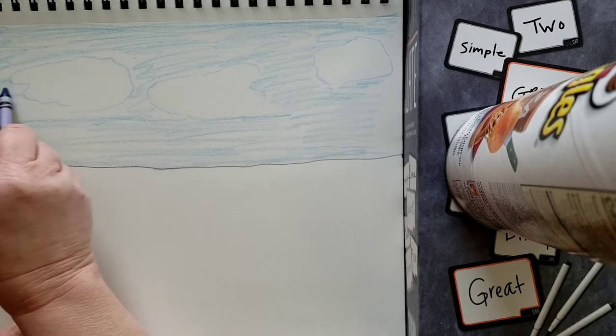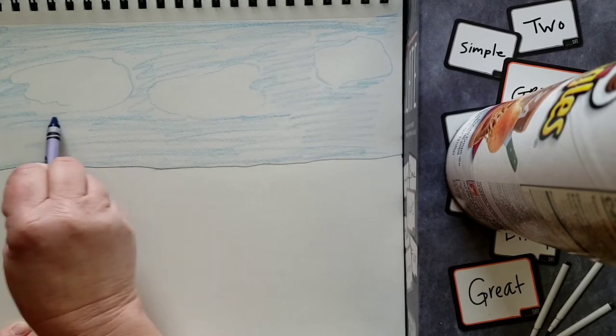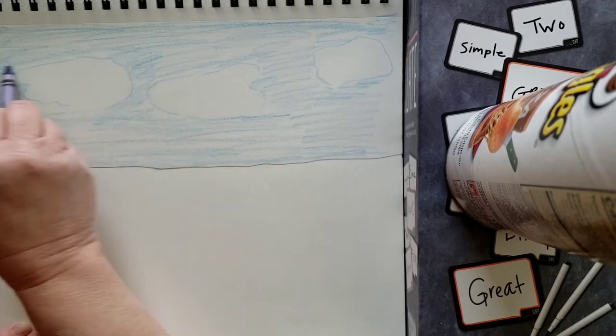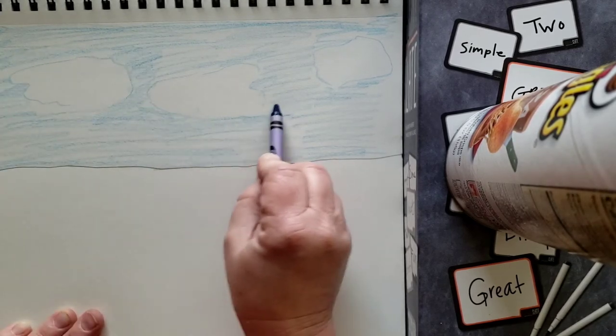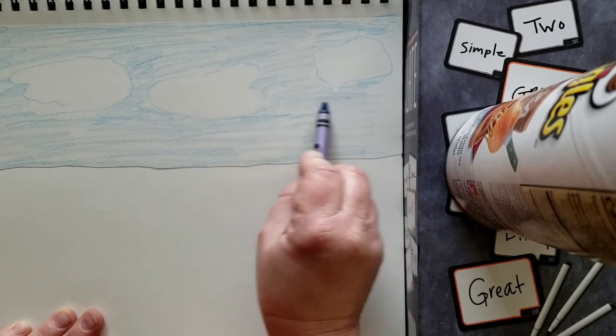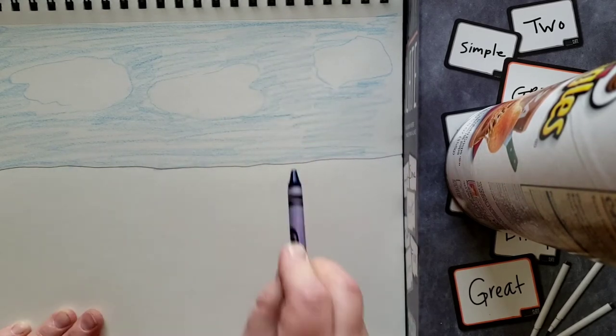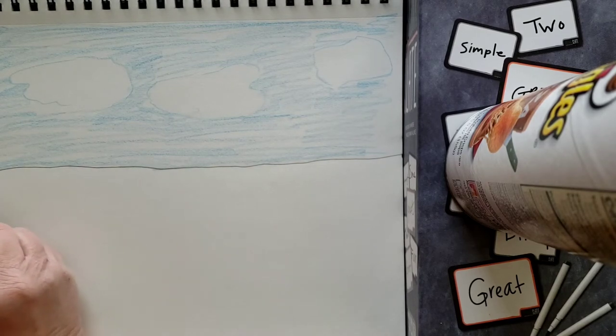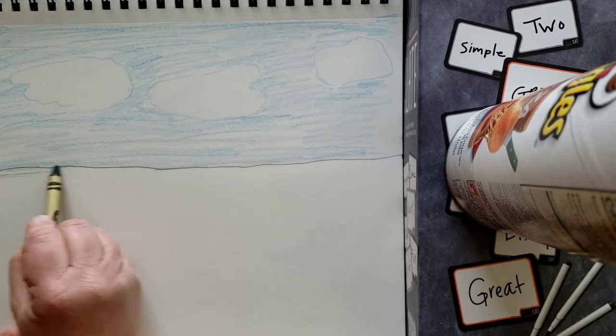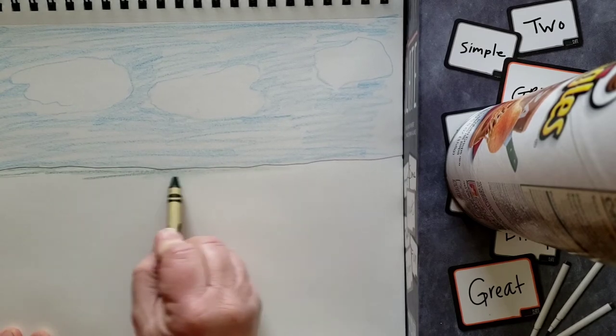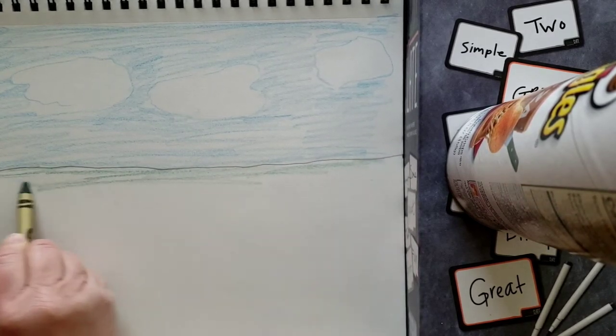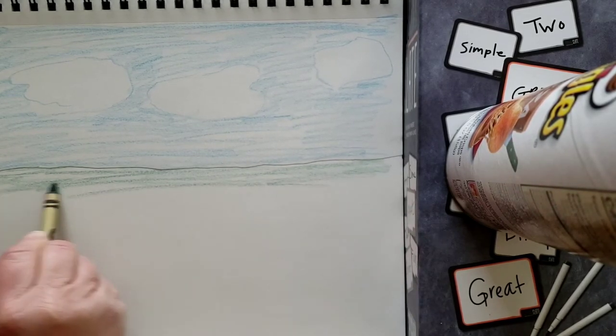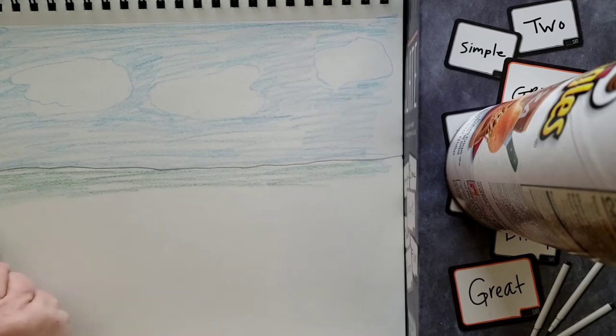You can also pause the video if you want to go get something else to use. Because like I said, you could do this with crayons, chalks, colored pencils, paint. All right, so there's my sky. And I'm going to make my land green here. I'm just going to color that green right up to my horizon line and I'm going to try and fill in as much of my space as I can.